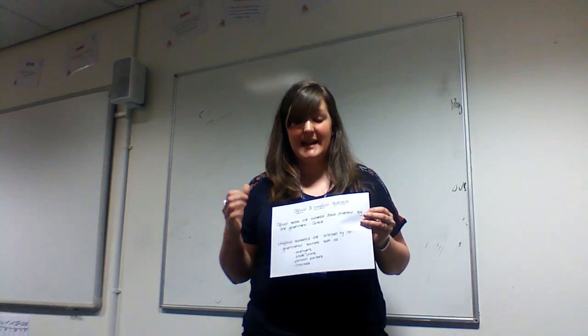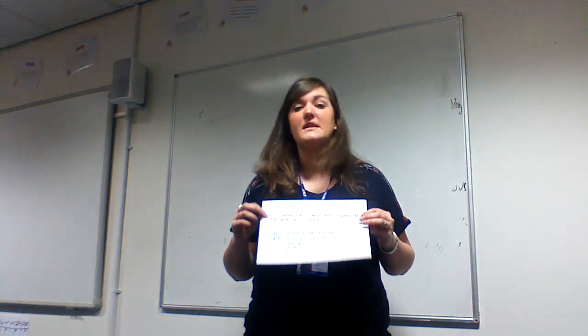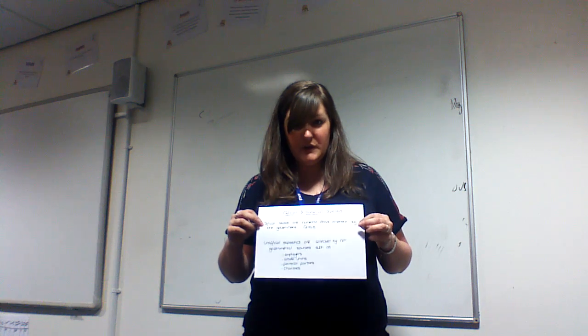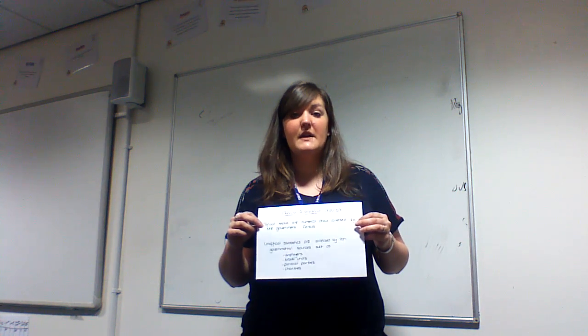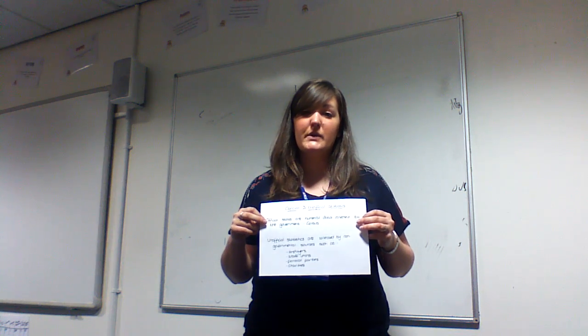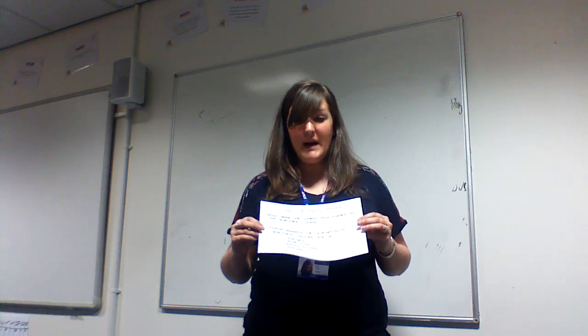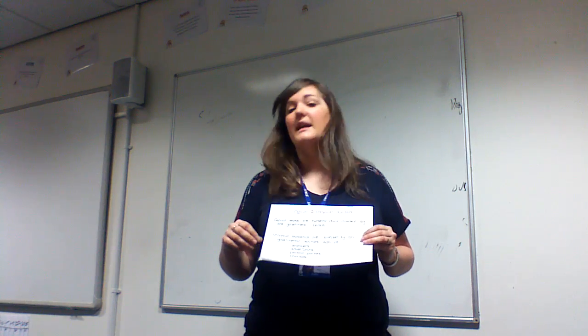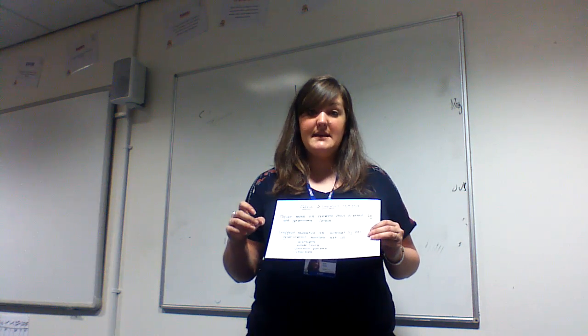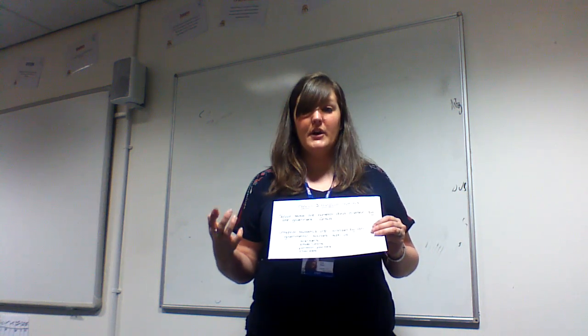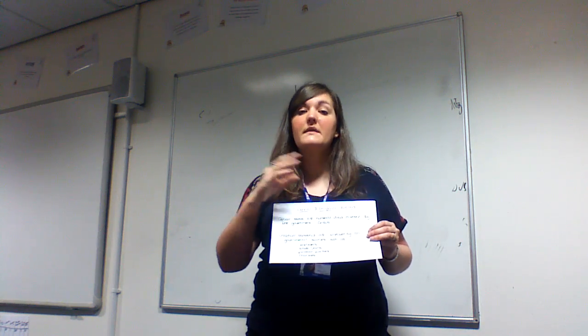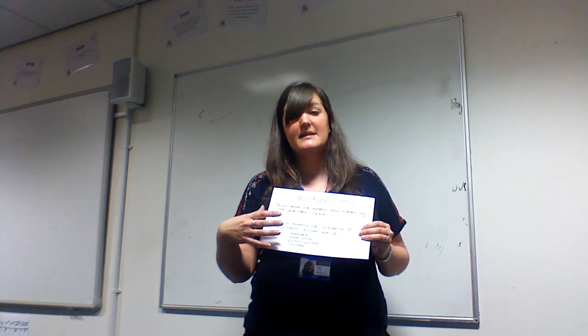Positivists also really like statistics — this measurable data they can gain scientifically. Official statistics are numerical data produced by the government, such as the census or the general household survey — two really good examples. You can also have unofficial statistics collected by non-governmental bodies such as charities, think tanks, political parties, employers, and colleges. All of these collect data that sociologists can use as secondary data. Official statistics also fall under secondary data.